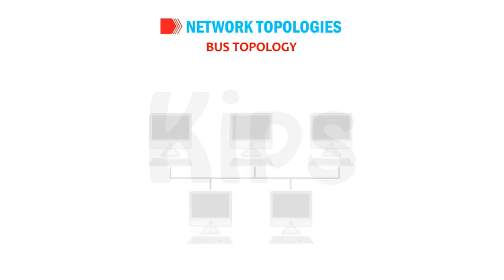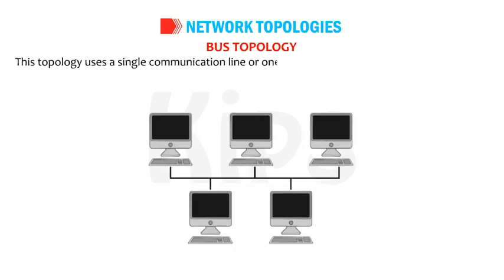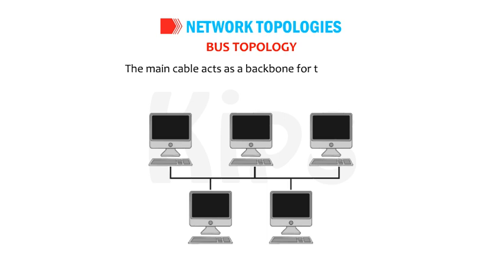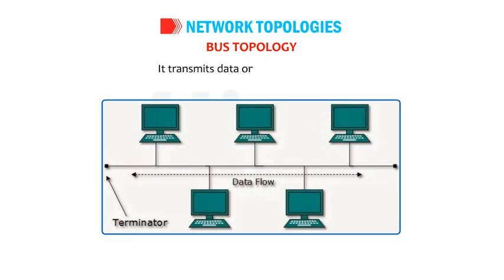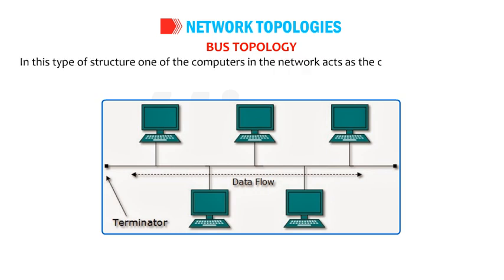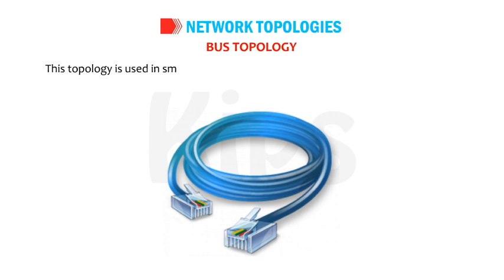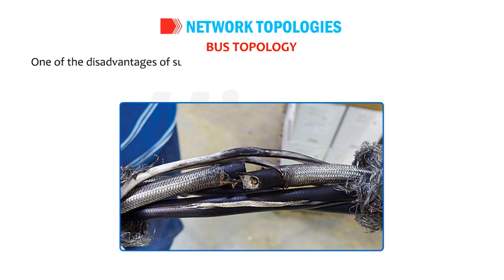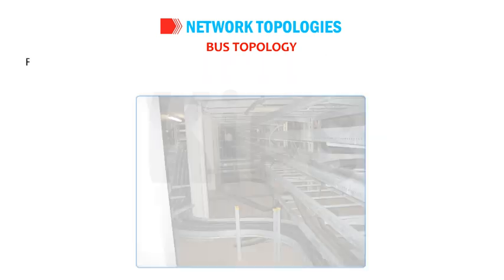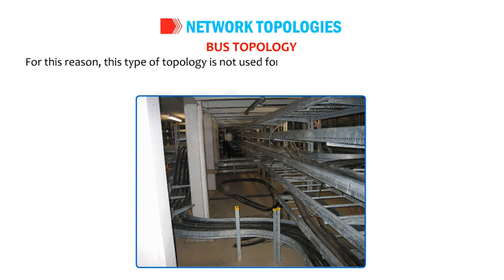Bus topology uses a single communication line or one main cable to which all nodes are directly connected. The main cable acts as a backbone for the network and transmits data in only one direction. One computer acts as the server that provides data to all clients. This topology is used in small networks where cable requirement is relatively small. A disadvantage is that if the main cable fails, the entire network becomes unstable; for this reason, bus topology is not used for large networks covering an entire building.